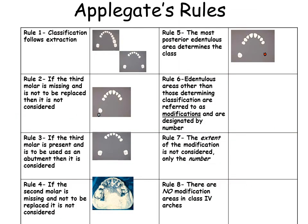The Kennedy class must then be supplemented with Applegate's rules. Classification follows extraction. If third molars and/or second molars are missing and not to be replaced, they are not considered; if they are to be replaced, they are considered. We will assume that the first molar shall always be replaced if it is missing. The most posterior space determines the classification. Edentulous areas other than those defining the class are considered as modification areas, and are denoted only by number. The extent of the space doesn't matter. There are no modification spaces in the Class 4 arch.